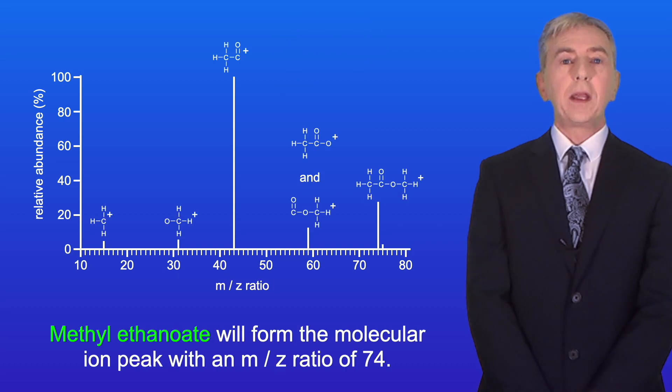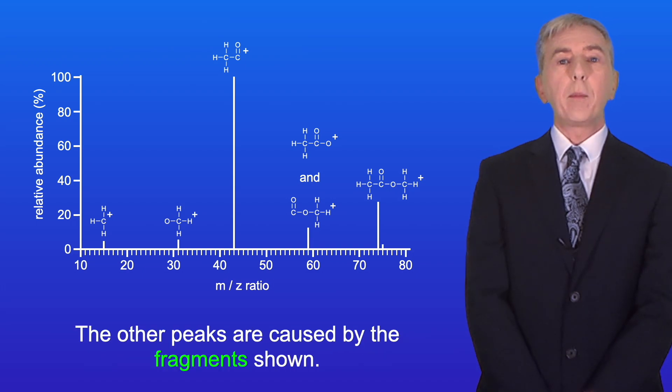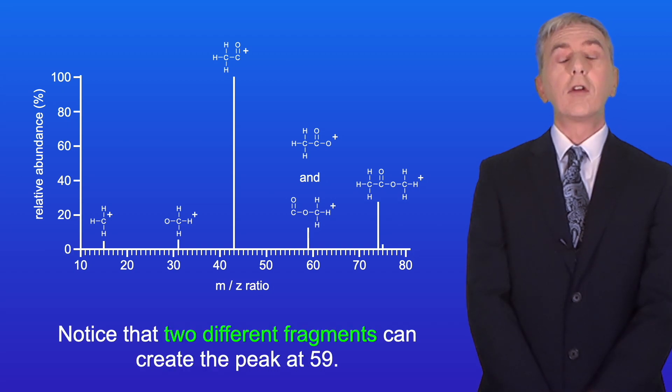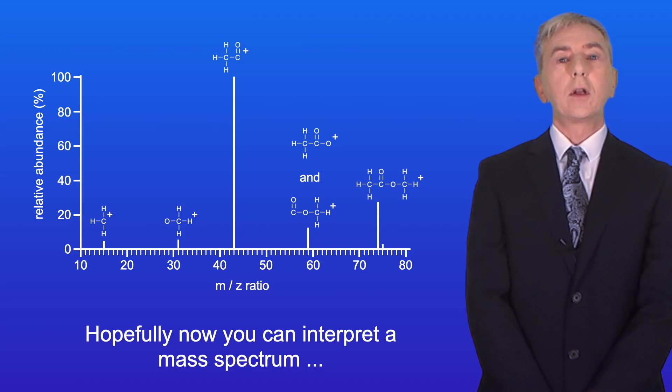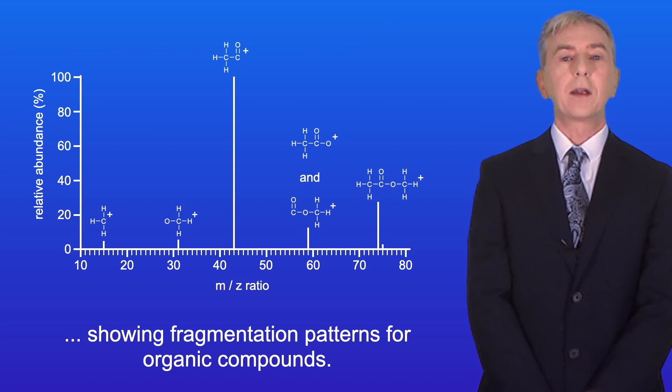Okay so methyl ethanoate will form the molecular ion peak with an m/z ratio of 74 and the other peaks are caused by the fragments shown. Notice that two different fragments can create the peak at 59. Okay so hopefully now you can interpret a mass spectrum showing fragmentation patterns for organic compounds.